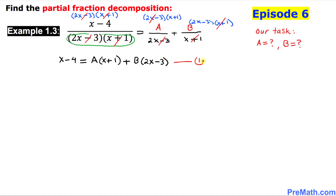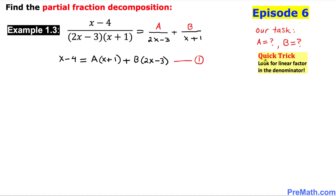Now let's use a quick trick: look for the linear factors in the denominator. We have two linear factors — (2x minus 3) and (x plus 1). I'm going to write both of them down and set each equal to zero.